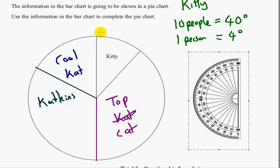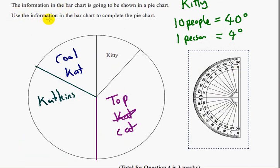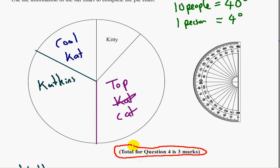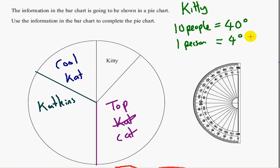So have we answered the question? Use the information in the bar chart to complete the pie chart. I think we've done that. So question 4 is worth 3 marks. And let's have a look at the mark scheme to see how we get those marks. The first one is a method mark for working out that one person is 4 degrees of the pie chart. The second mark comes from two sections being done correctly, and the third mark comes from a fully labeled and complete pie chart. So question 4 is worth 3 marks, and that's how you get your 3 marks. And that's it.